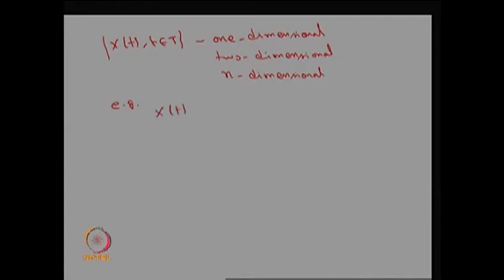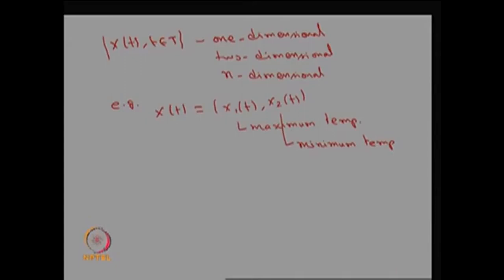For the two-dimensional example, the random variable X(t) = (X1(t), X2(t)), where X1(t) is the maximum temperature and X2(t) is the minimum temperature of a place at any time t.